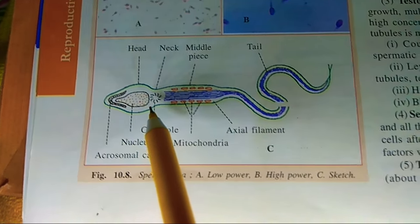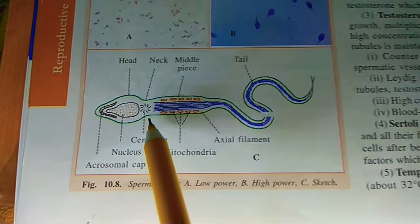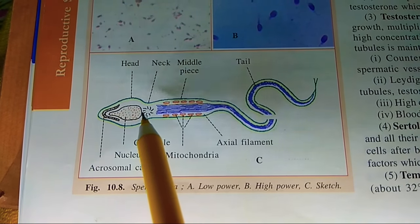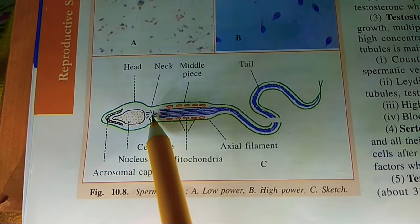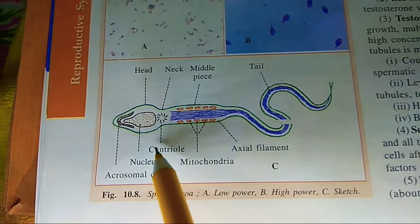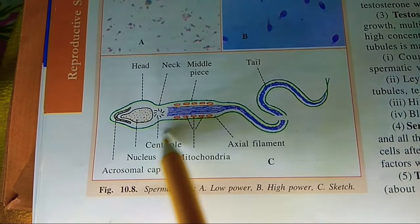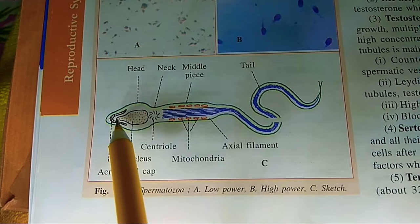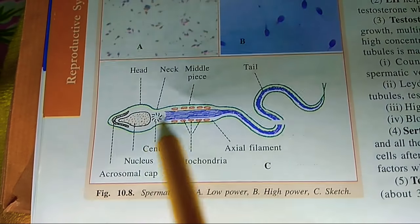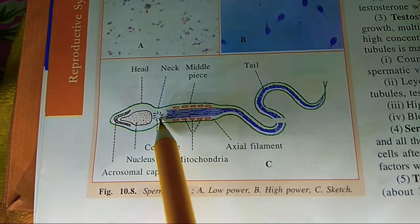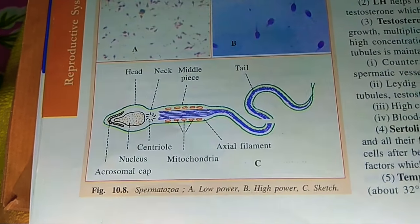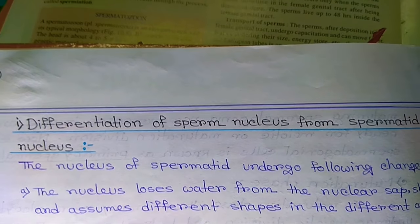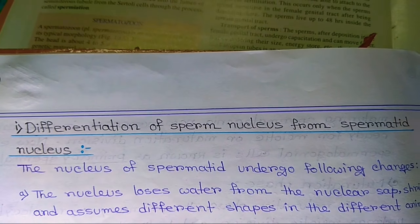The nucleus of the spermatid undergoes following changes. The nucleus loses water from the nuclear sap, shrinks, and assumes different shapes in different animals.